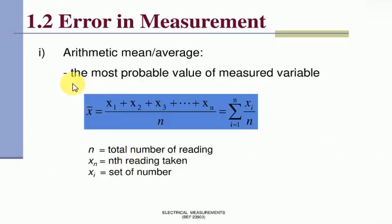Very first, arithmetic mean or average. The most probable value of measured variable is the summation of all the average, algebraic summation of the whole reading. n equals total number of readings, xn equals nth reading taken, and xi equals start of number. That is the formula for arithmetic mean or average.